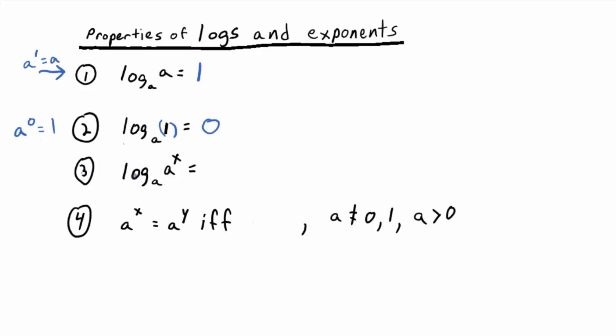Okay, and then property number three, log base A of A to the X power is just equal to X. So, by the way, if you know property three, property one, you don't need to know. It's a subset of property three. It's where X is just equal to one. So why is that true? Log base A of A to the X power equals X. So it's like the exponent's just falling down. So why is that true?